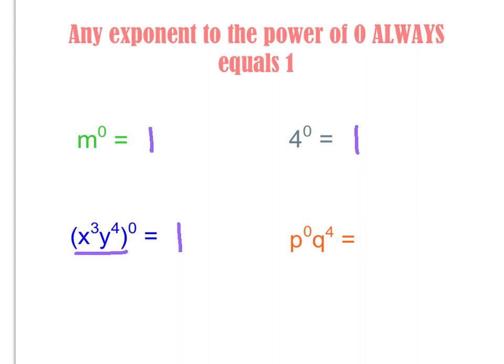If I have p to the power of zero, I would get 1. q to the fourth power wouldn't change because that's not raised to the power of zero — only the p is. So I get 1 times q to the fourth power, or just q to the fourth power, since a coefficient of 1 is often dropped. So really, any exponent to the power of zero always equals 1, and any number raised to the power of 1 is always going to equal itself.